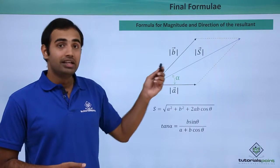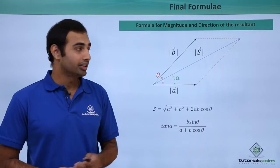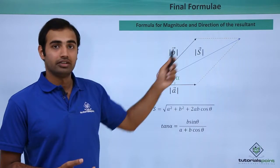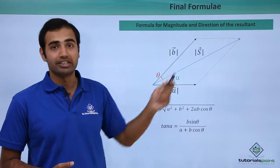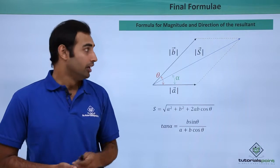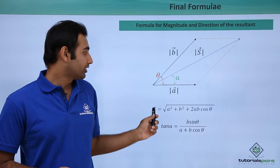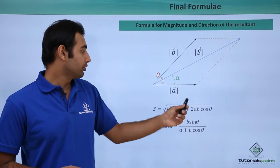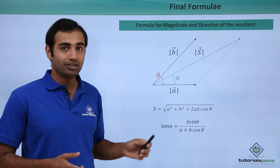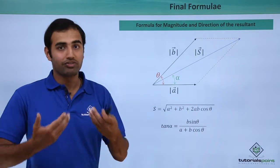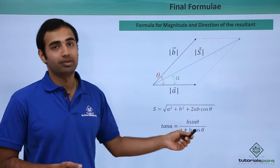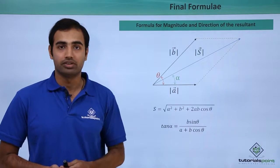Taking the original vector diagram: vector a and vector b are added to give the S vector, which is the resultant. The magnitude of the resultant is the square root of a² + b² + 2ab cos theta. The direction, or the value of angle alpha, satisfies tan alpha equals b sin theta upon (a + b cos theta). These results are very important for the vectors topic and every student must memorize them properly.